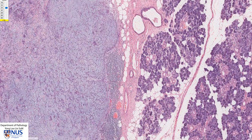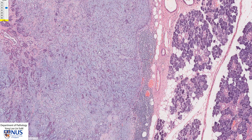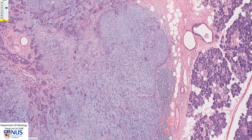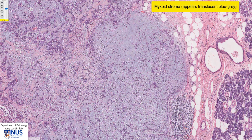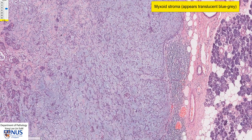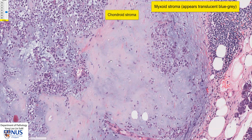Here we have the interface between the normal salivary gland and the tumour. At low magnification, the tumour appears very blue-grey because there is abundant myxoid stroma. When we use the term myxoid in microscopy, we usually mean this kind of translucent bluish-grey appearance, which is due to stromal matrix material or extracellular matrix. In other areas, the stroma has a chondroid appearance, looking like mature cartilage. Putting these together, we call this a chondromyxoid stroma.